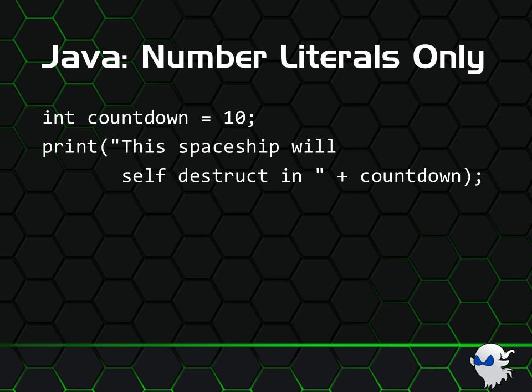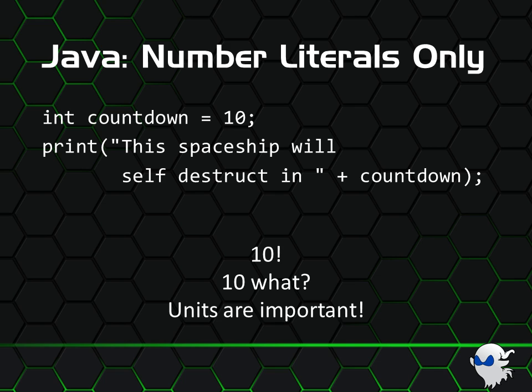So let's talk about a pet hate of mine. What is wrong with this code? Well, it is going to print: 'This spaceship will self-destruct in 10.' 10? 10 what? 10 seconds? 10 hours? What? Dammit, units are important, especially if my spaceship is about to explode. But more realistically, I see this a lot in APIs when setting timeouts, and it leaves the developer guessing as to whether to pass in minutes, seconds, or milliseconds. Get it wrong, and your 1 second timeout may turn into 16 and a half minutes.